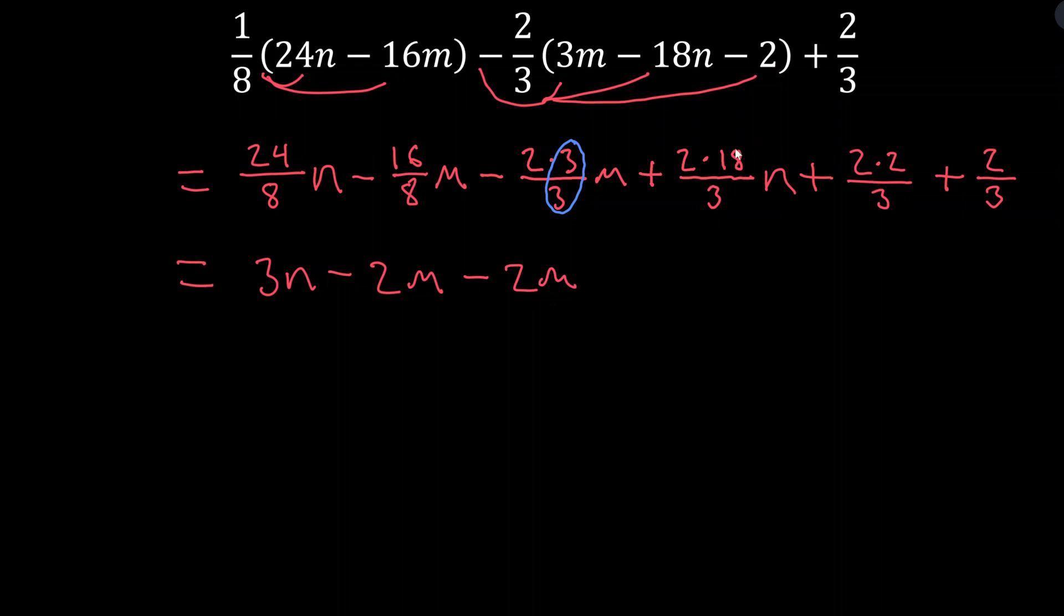So 18 over 3 is the same as 6 over 1. And since we have this 2 here in the numerator, what we're left with is 2 times 6n, which is 12n. 12n plus what do we have here? 2 times 2 over 3. That can't be simplified, so that's just going to be 4 over 3 plus 2 over 3. Now let's see if we can combine these like terms. What do we have? We have 2 n terms, 3n plus 12n. We have 2 m terms minus 2m minus 2m. And we have 2 constant terms.